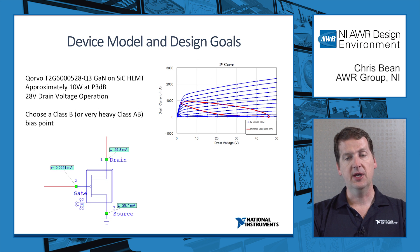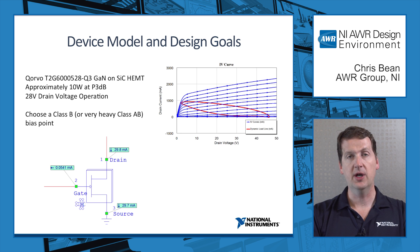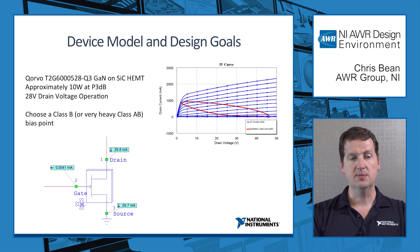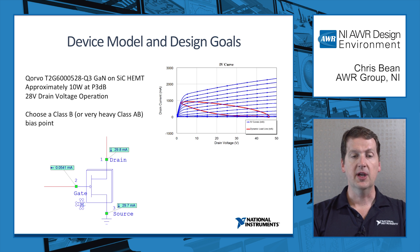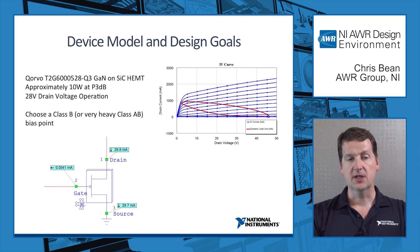Some specifics about the example I'm going to show here: it's based on a Corvo gallium nitride device, about 10 watts of P3dB power, 28 volt drain operation, and we're biasing essentially class B or very heavy class AB. You can see we only have 30 milliamps of quiescent current, and we can also see the class B behavior with the dynamic load line.